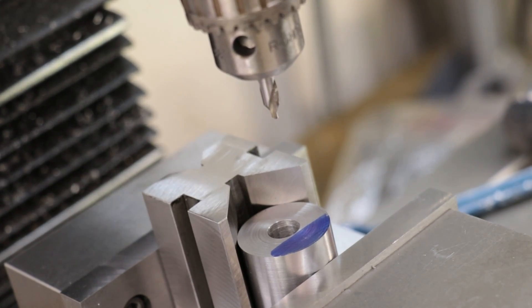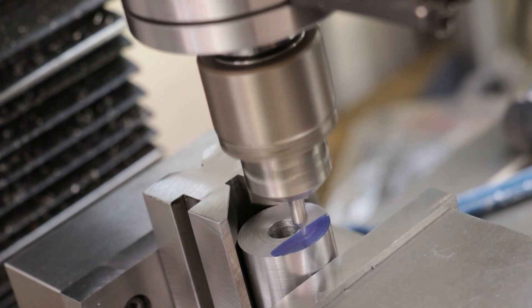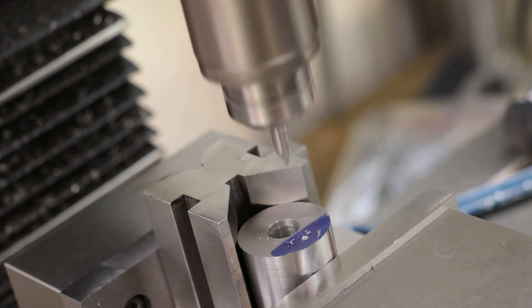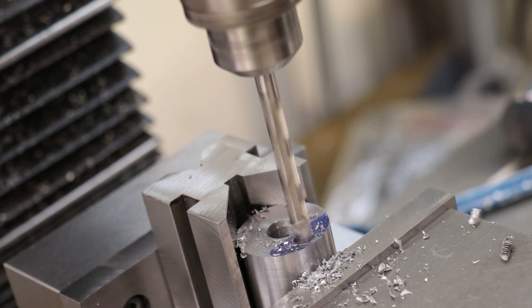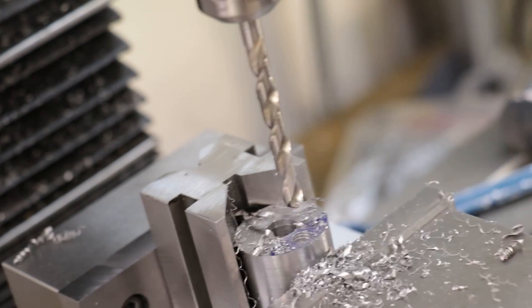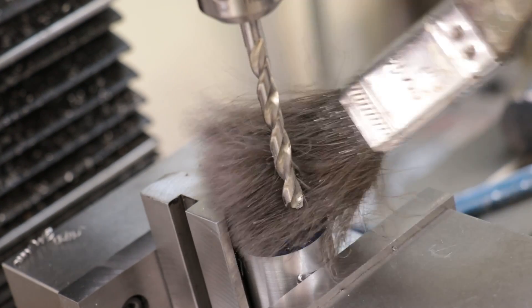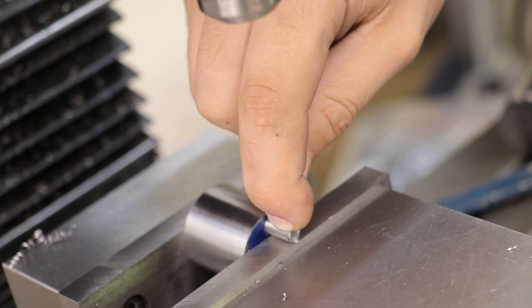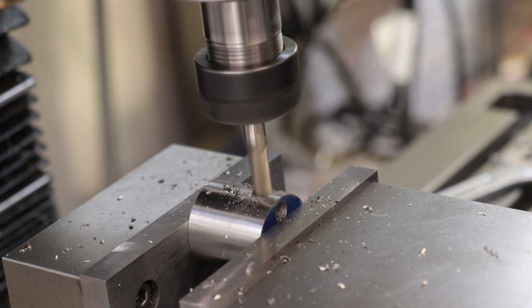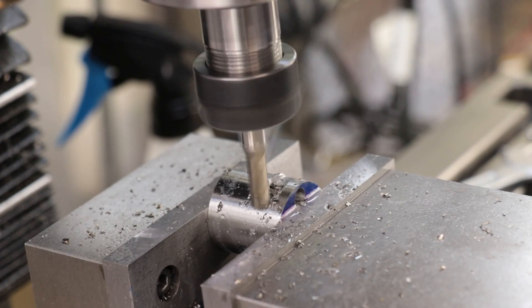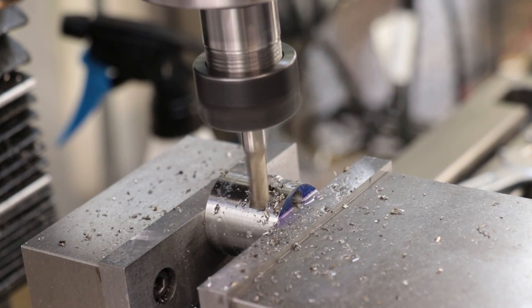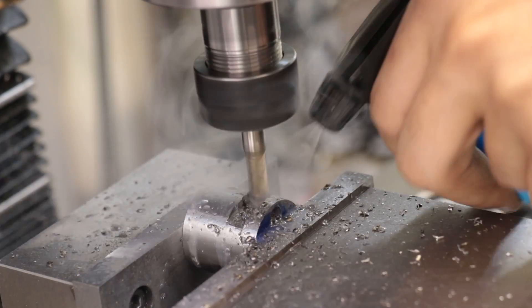With the front half done, I can now machine the back starting with the hole for the pin. I'll then machine a slot in the side and this will allow me to select which way the screwdriver ratchets.